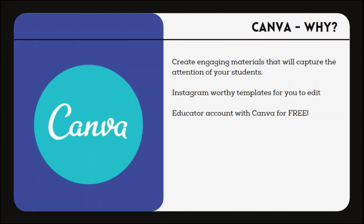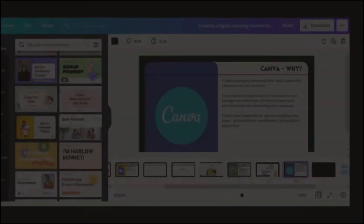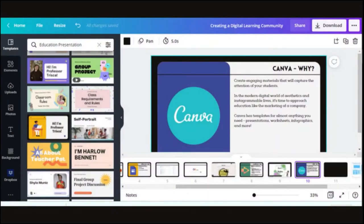Plus, you can get an educator account for free. Here you can see the studio view in Canva, where this presentation was created. On the left side, you see samples of editable templates. The Elements tab includes shapes, lines, and clip art. You can upload your own images and video, add text, and change the background. The options are endless.